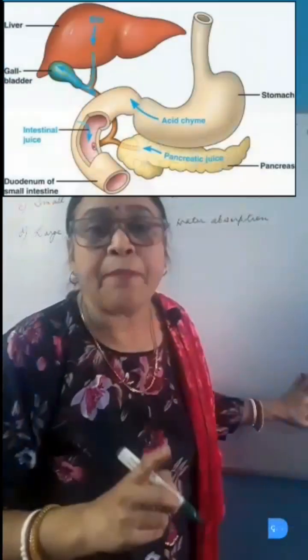gastric juice which secretes hydrochloric acid and makes the medium acidic, and helps the enzymes pepsin and rennin to digest the proteins.